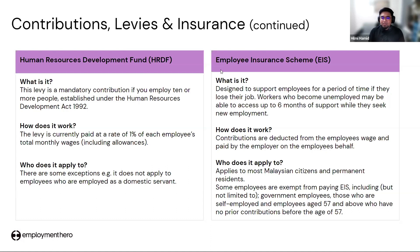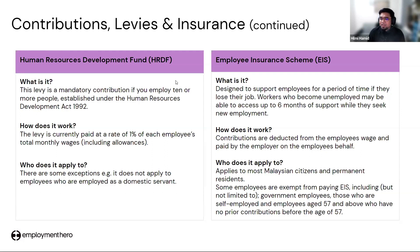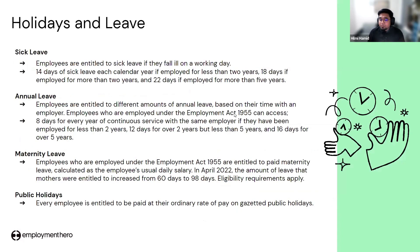The last statutory contribution is EIS — the Employment Insurance System — which is designed to support employees for a period of time if they lose their job. Employees who lose their job can get up to six months of support while seeking new employment. These are the mandatory contributions for both employee and employer when doing payroll in Malaysia.